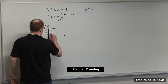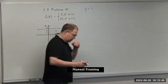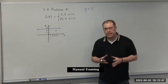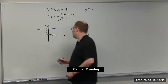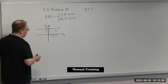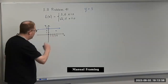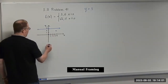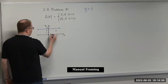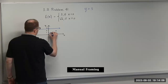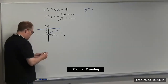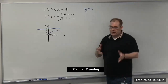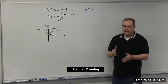We can pick one more point to get the general shape. When x is one, the square root of one is one, so we plot (1, 1). That gives us the curve for square root of x. Remember, the domain of square root of x is x greater than or equal to zero.